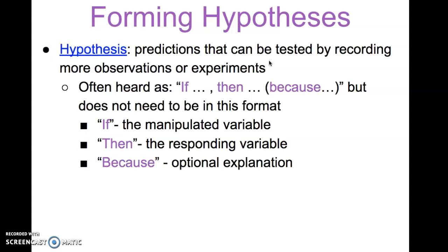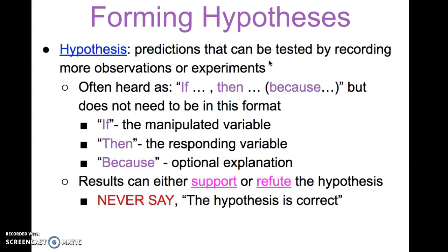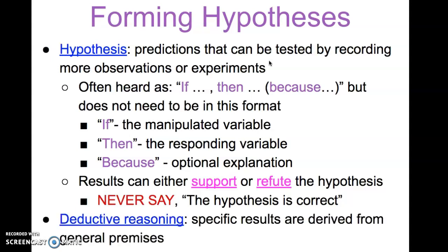The 'because' is just an optional explanation as to why you think the one would relate to the other. Ultimately, hypotheses can either be supported or refuted by the data that's collected. One thing that you do need to pull away from is to never say that a hypothesis is correct or incorrect. We need to use the term support or refute.